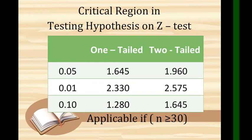Now in solving the Z-test for difference between two sample means, we need to use this critical region in testing hypothesis on Z-test. We have one-tailed and two-tailed, with 0.05 to 0.10 as the level of significance. These numbers here are the level of significance or alpha, and these are the tails. What is good in the difference between two sample means is it is always two-tailed.